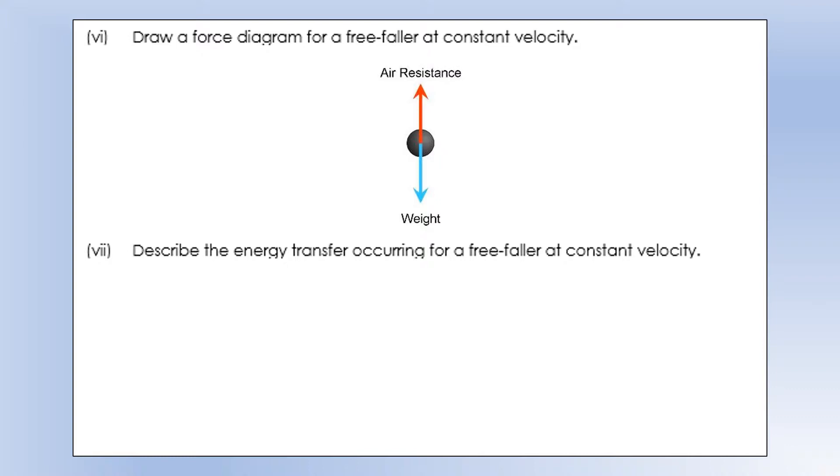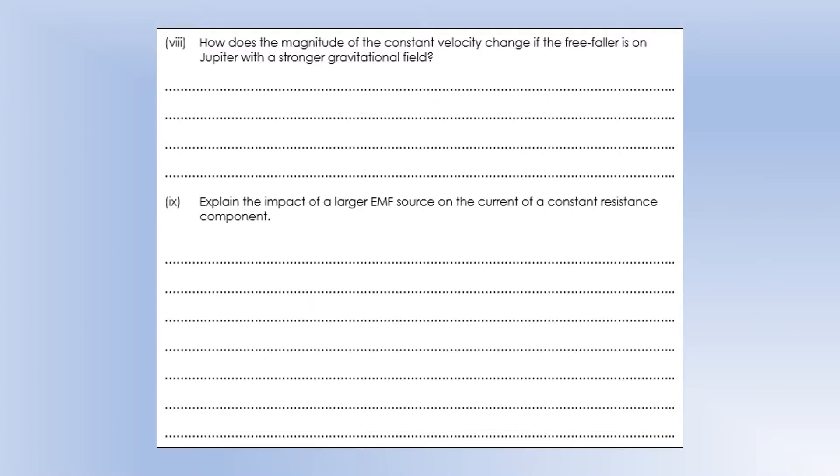So what energy transfer is occurring here? Well, we're taking gravitational potential energy. Remember, they're falling, so they're losing gravitational potential energy. And we're transferring it into thermal energy, or heat. So this is very much, again, similar to what's happening in a circuit. Initially, what happens is the gravitational potential energy is transferred into kinetic energy, and they increase in their speed. But eventually, you reach this constant velocity, and then the energy transfer changes.